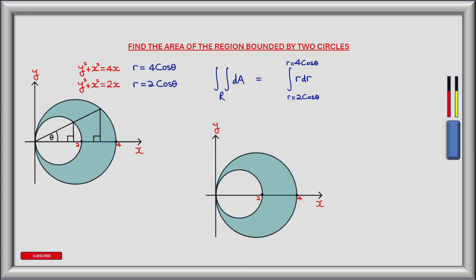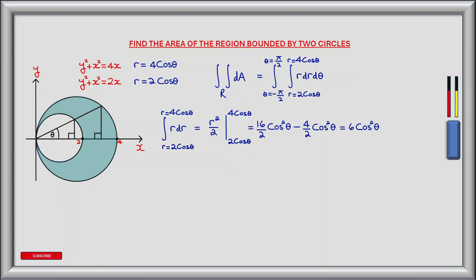For the outer integral, we need to move through all angles of theta that encompass our region. Theta travels between negative pi over 2 and positive pi over 2 to cover the region. So our outer integral goes from theta equals negative pi over 2 to theta equals positive pi over 2, summing all the tiny sectors of d theta. Now let's evaluate the inner integral, integrating r dr from r equals 2 cos theta to r equals 4 cos theta.